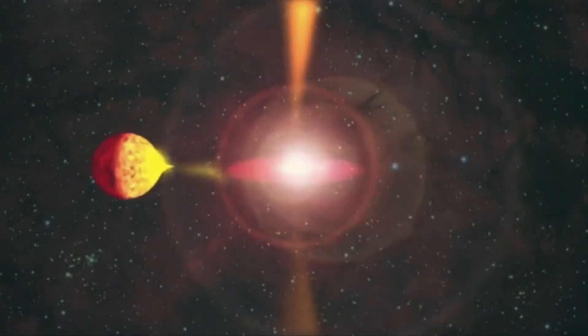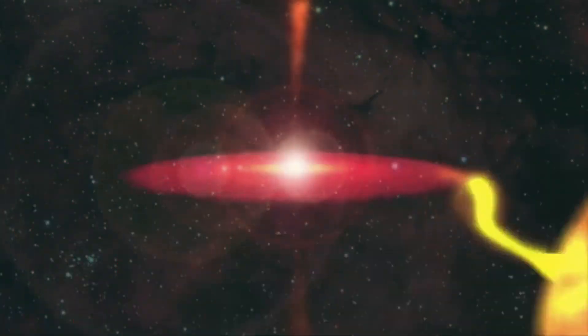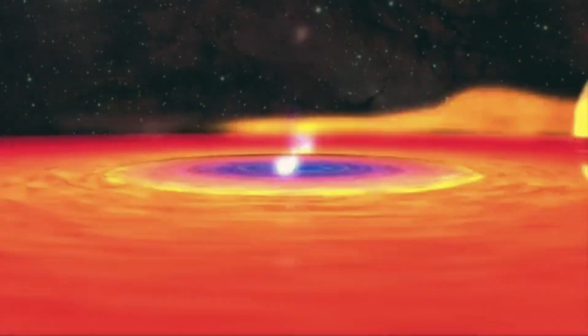The star's closest approach to the black hole occurs at a specific elliptical orbital point known as the perihelion. At the perihelion, the gravitational forces are at their strongest.